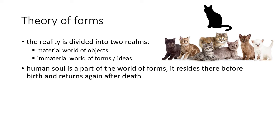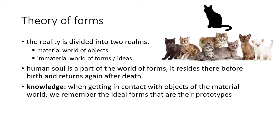According to Plato, a human soul is a part of the world of forms. It resides there before birth and returns there again after our deaths. This has two important results. The first is that when we get in contact with objects of the material world, we somehow remember the ideal forms that are their prototypes. When I see one cat, and a second cat, and a third cat, I intuitively understand that they have a prototype in the immaterial world of forms — the idea of catness.